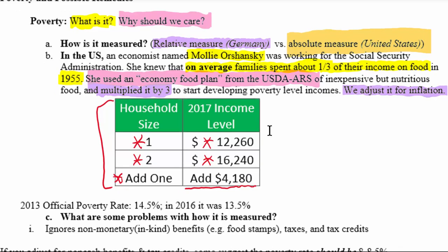In 2013 in the United States, the official poverty rate was 14.5%. By 2016, it had gone down to 13.5%, still declining after the recession of around 2007–2008. But what are some problems with how this is measured?